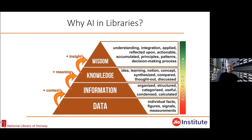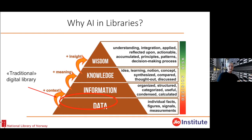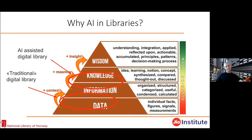So why do we do this in libraries? Traditionally, I presume you all know this pyramid spanning from data at the bottom through information and knowledge up to wisdom. I believe it is right to say that the traditional digital library, including ours, is in the lower two parts of the pyramid — the data and information part. While we would like to be higher up, we would like to give access to knowledge rather than information. Today, we give access mainly to information. This is an important motivation to do AI in libraries: to try to give people access to knowledge.